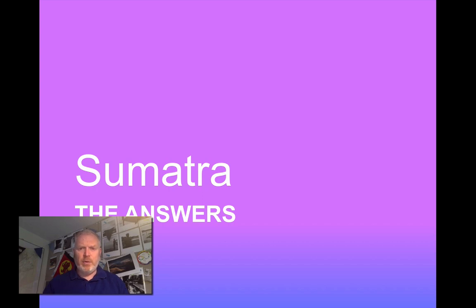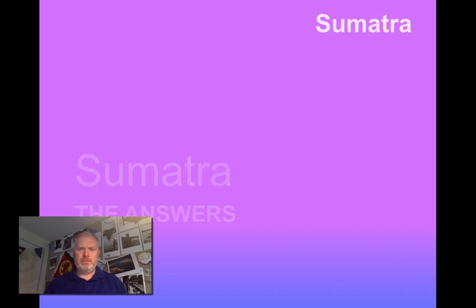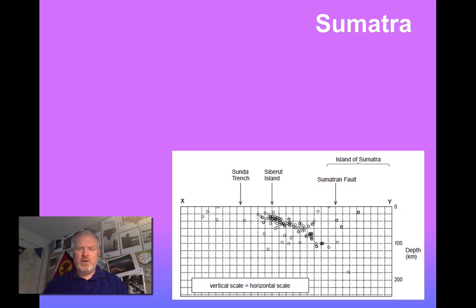OK, let's see what we've come up with. So our first set of questions was about this cross section. To describe the distribution of earthquake foci. Well, if we look at this, the majority of them are less than 100 kilometers deep. Most of them are in a linear alignment between Sibirut Island and the Sumatran Fault.